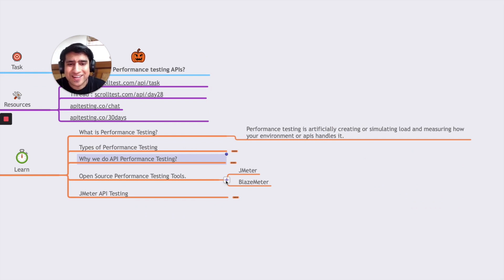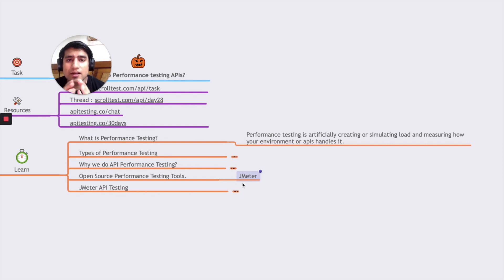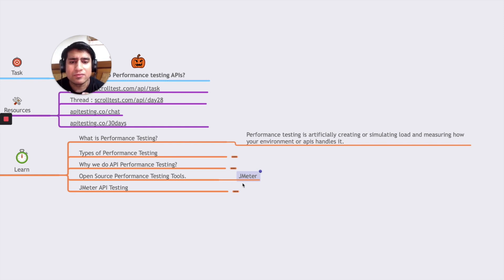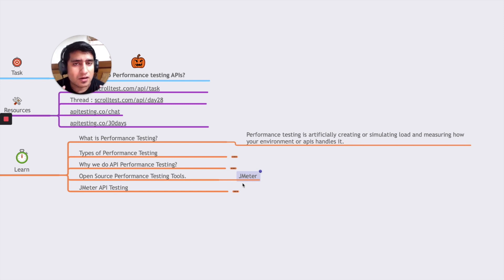Some open source tools available include JMeter, which is open source and free. There are other tools like Locust and BlazeMeter, which are more advanced. But I recommend starting with JMeter, especially if you've taken the 30 Days API Testing Challenge and want to get a grasp of how it's done at the beginning.